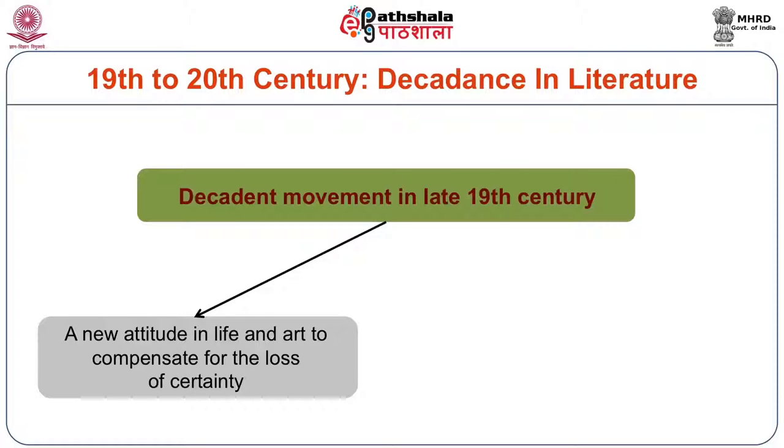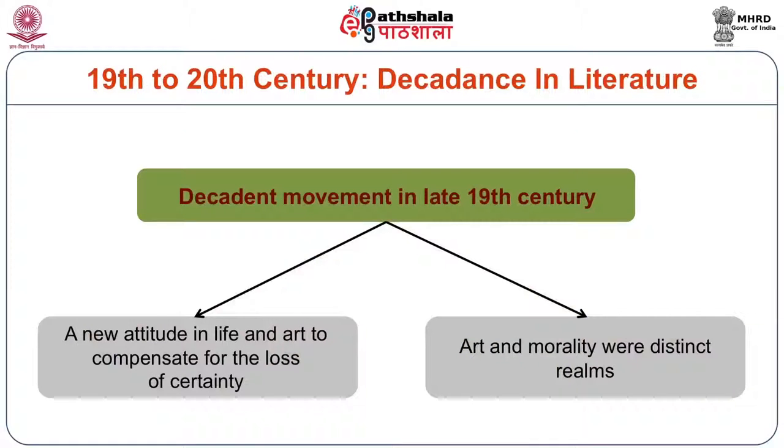Decadence is a new attitude in life and art to compensate for the loss of certainty. The loss of certainty happened in a way with Charles Darwin, and also with the book that shook Europe — Thus Spake Zarathustra by Friedrich Nietzsche — who came up with the pronouncement that God is dead. The decadence movement also raises questions of art and morality. In the late 19th century, art and morality were seen as very distinct, separate realms. Decadence as a movement flourished in France, and the poet associated with it is Charles Baudelaire.